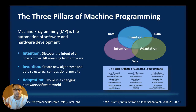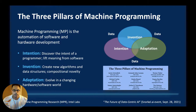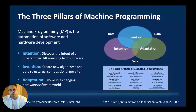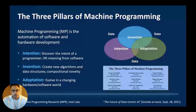Once intention is known, we move to the invention pillar. Invention is often not inventing from scratch; it's taking existing components and combining them in novel ways to fulfill the user's intention. However, there are cases where invention is truly novel — discovering something not previously documented by humans. One example is our AutoPerf system published at NeurIPS 2019, which automatically synthesizes performance regression tests to identify parallel performance bugs that existing systems couldn't detect.